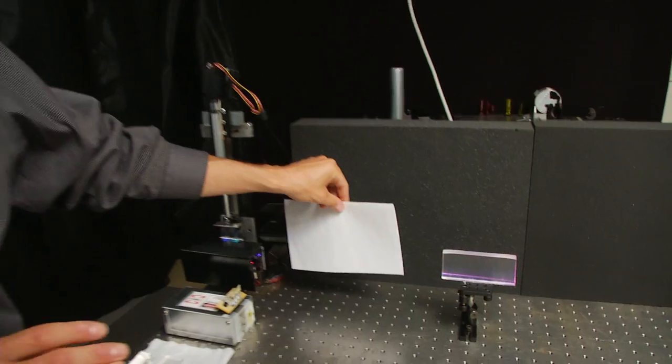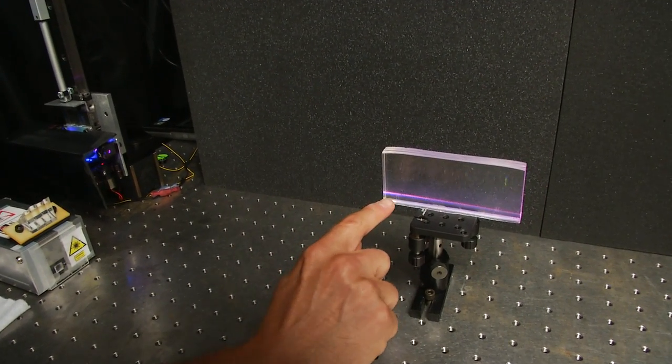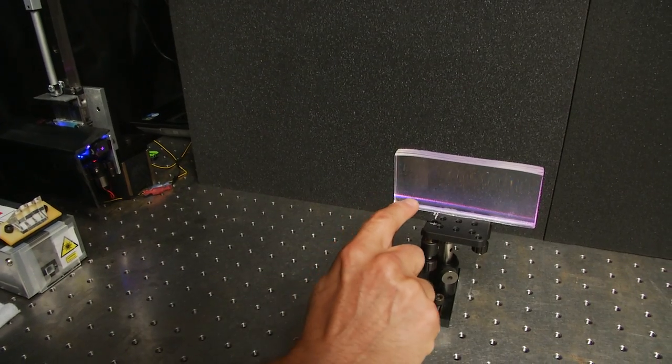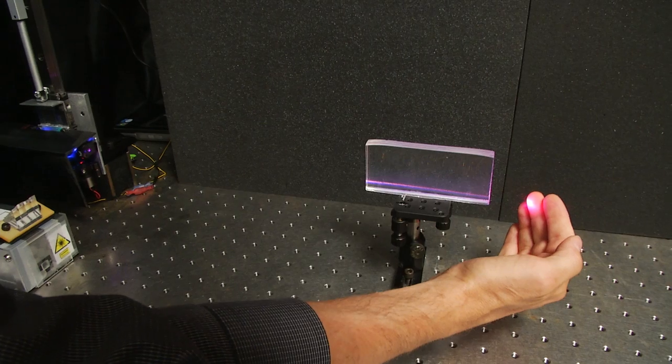So in this setup here, we have three laser sources that are all collimated into a single beam, kind of like a white light laser beam. Now, they're going to enter through the gradient index block. At the bottom of the block, there's no gradient index, so it'll travel straight through, and all three colors will travel straight through the block and come out the other side.